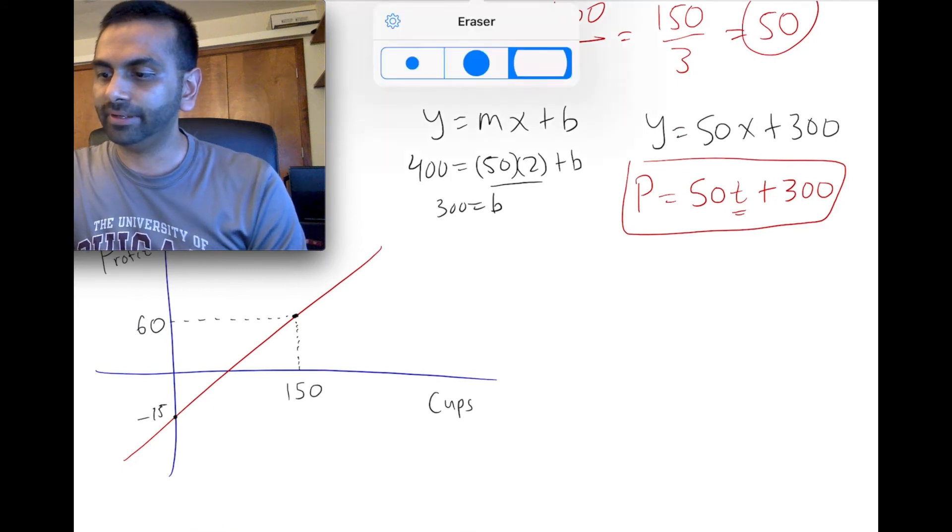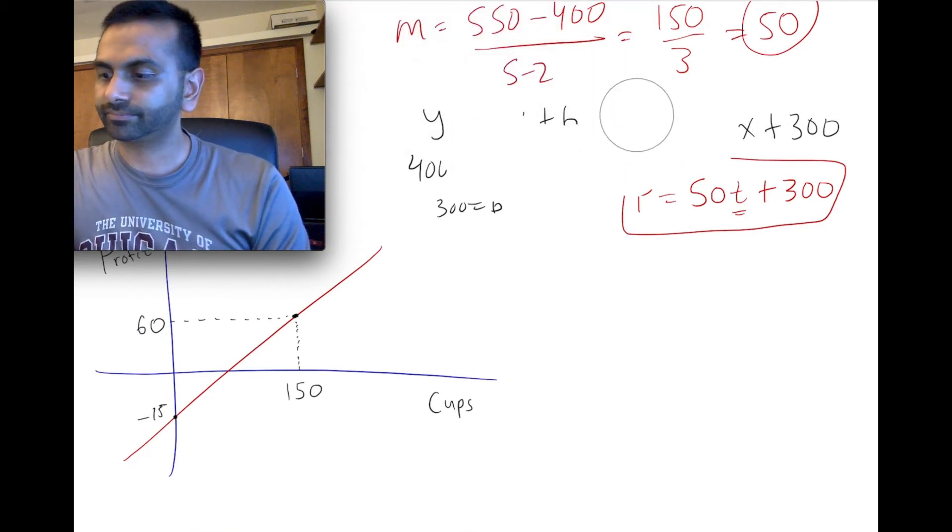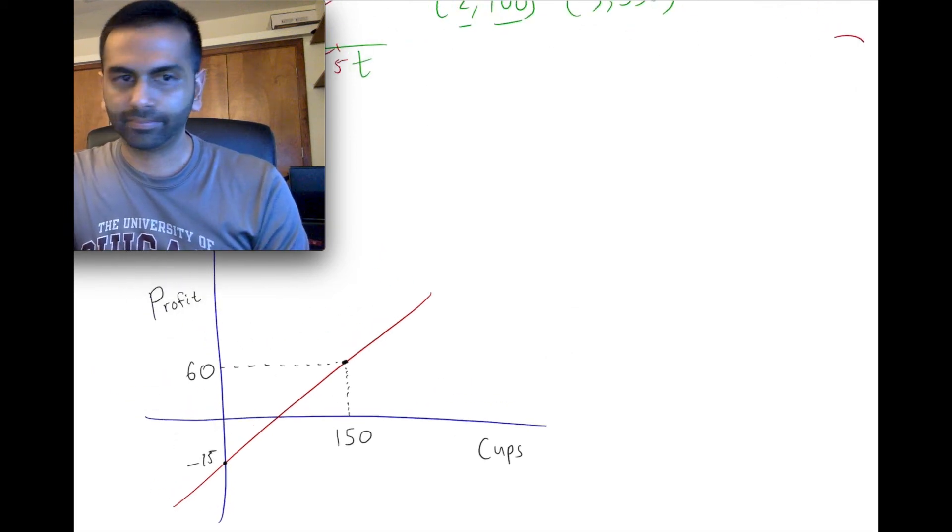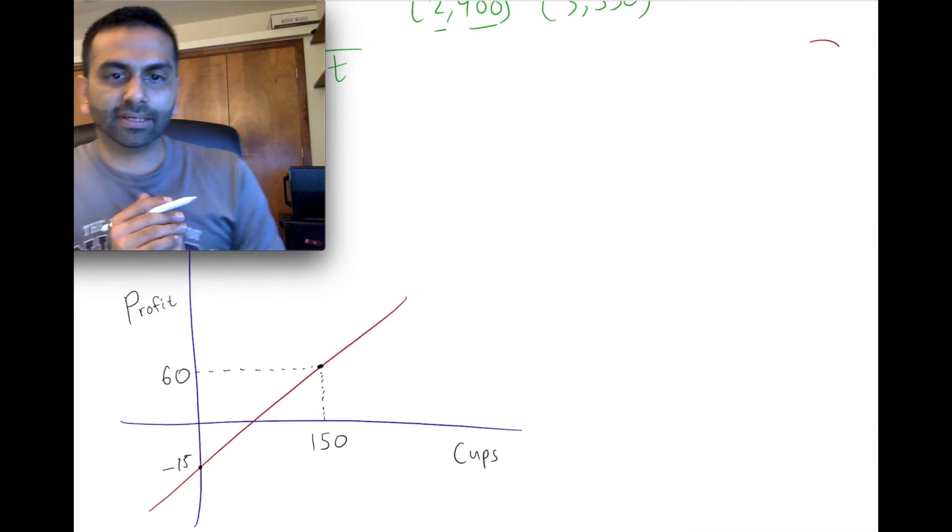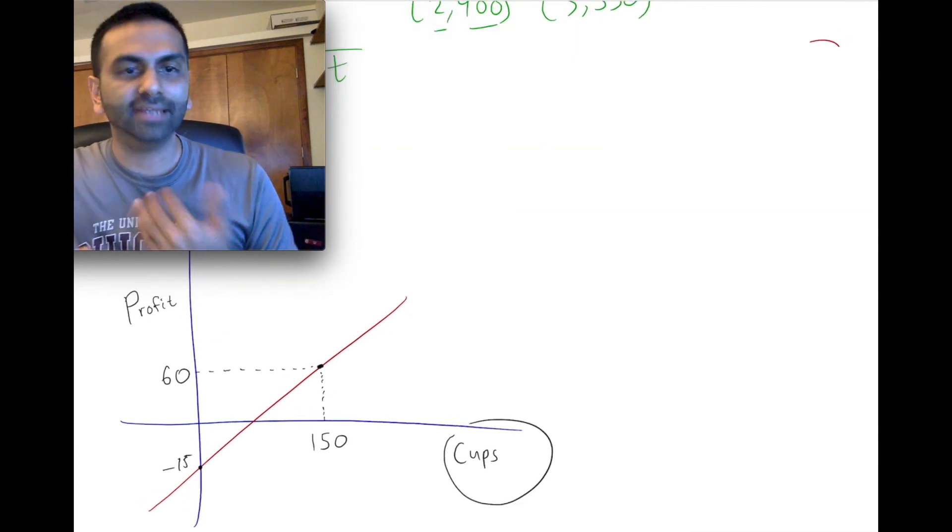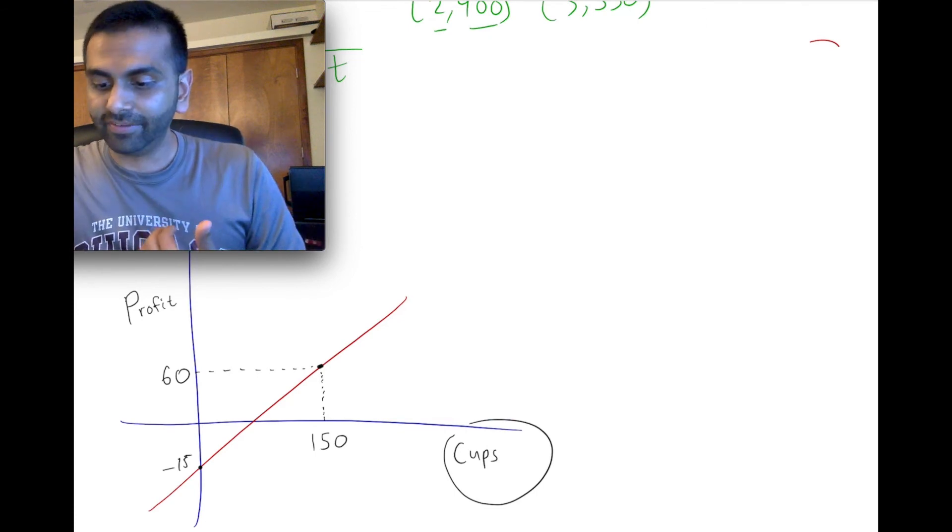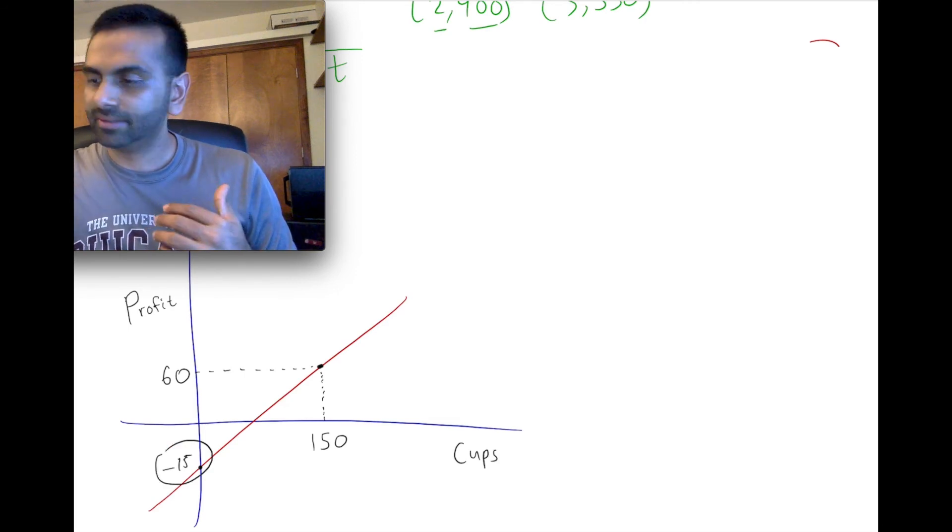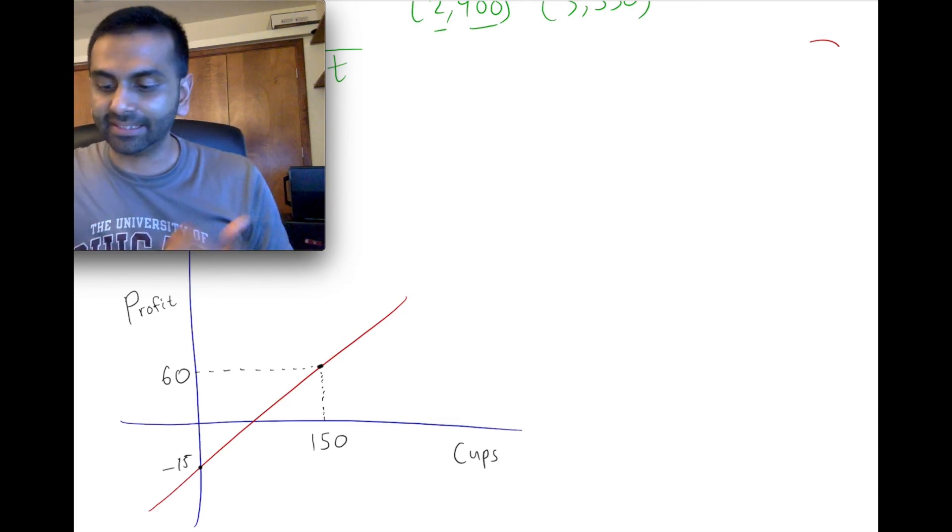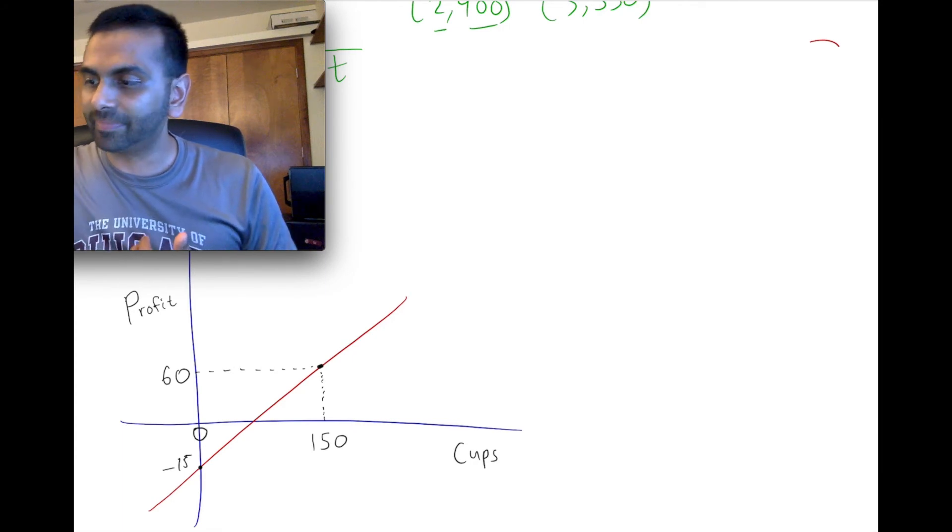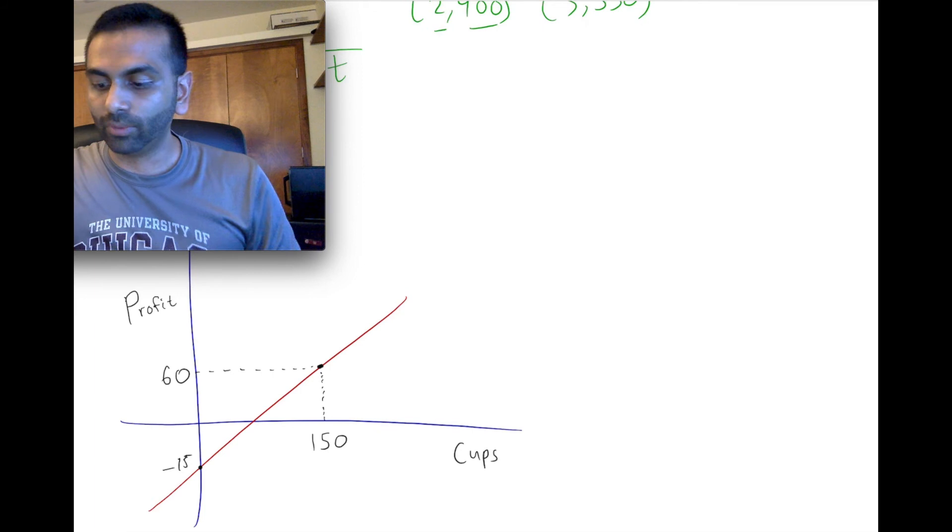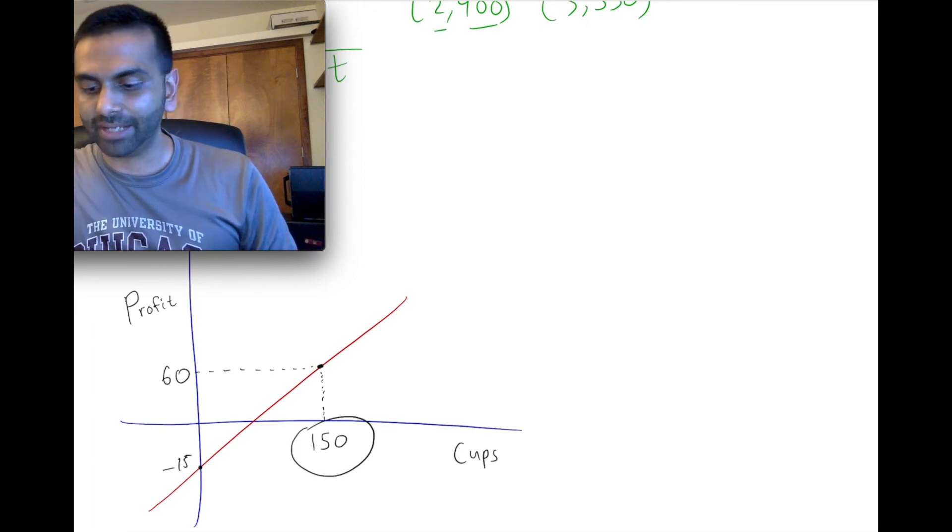Let's do one other example here. So let's say you're given this graph, where basically the cups of lemonade that you sell is on the X axis, and your profits based on that is on the Y axis. You're also on this graph given this information that this Y intercept is negative 15. You can kind of think of that as even if you sell zero cups of lemonade, it costs you 15 bucks to set up shop, and so your profit is negative 15. Alright.